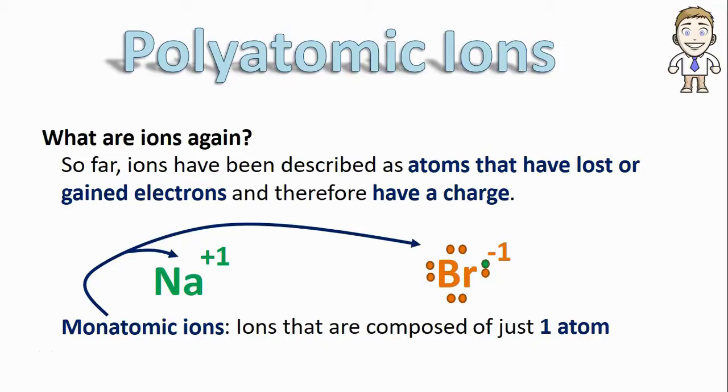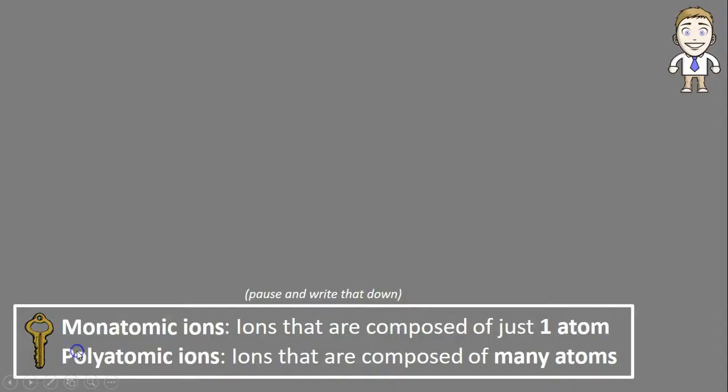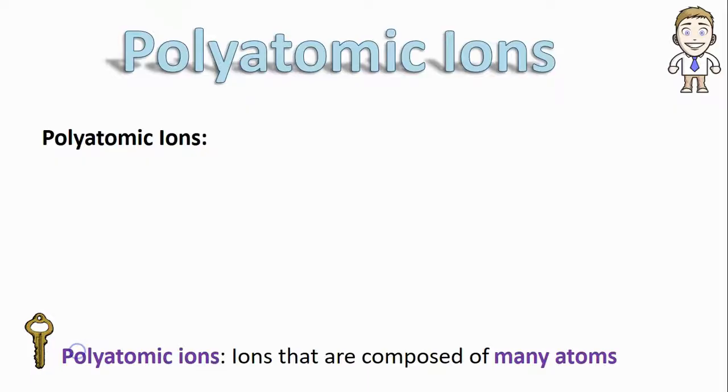But monatomic ions aren't the only type that exists. There's also polyatomic ions, which are ions that are composed of many different atoms. The prefix poly generally tells you that you're going to be talking about more than one of something.